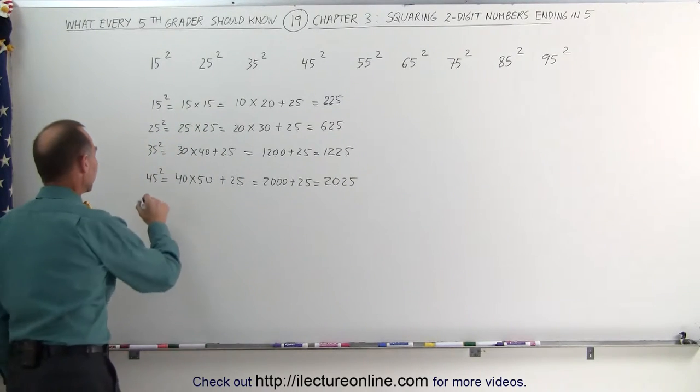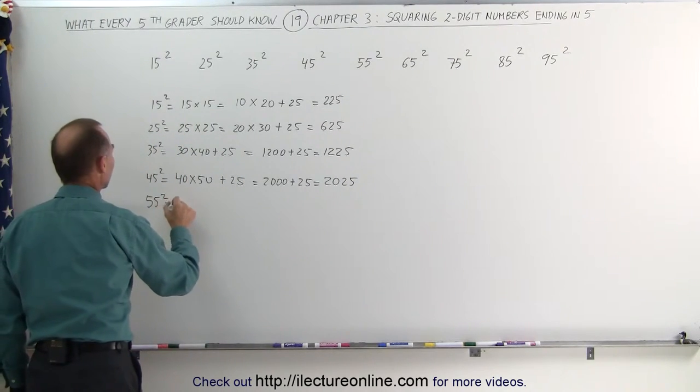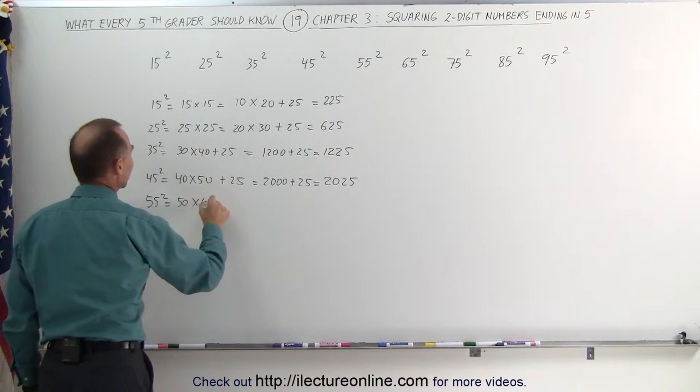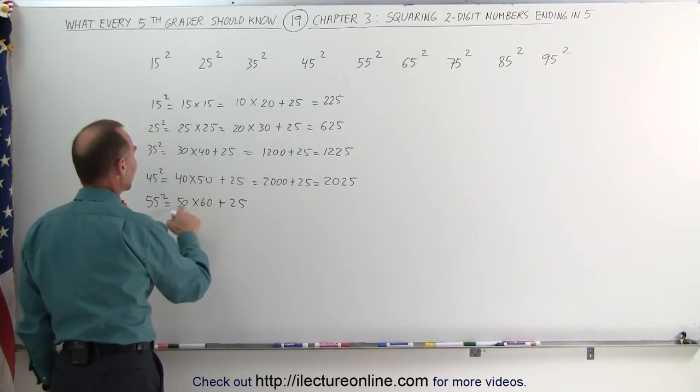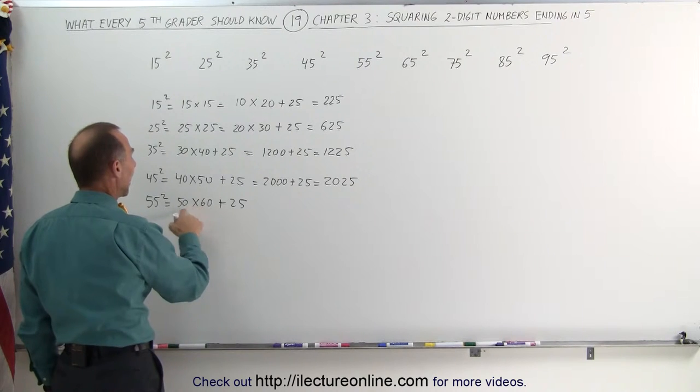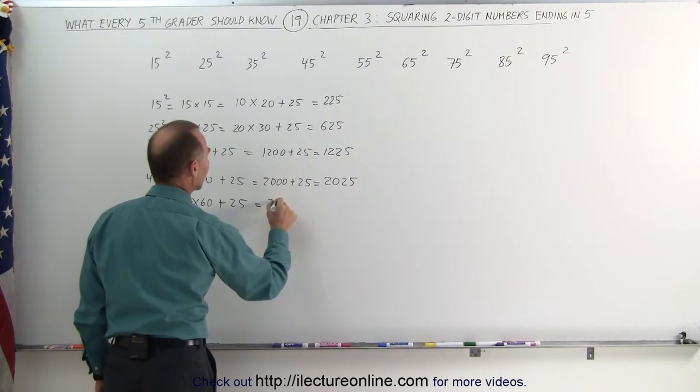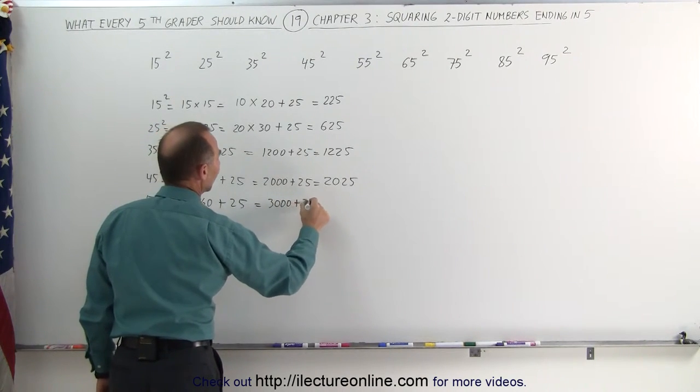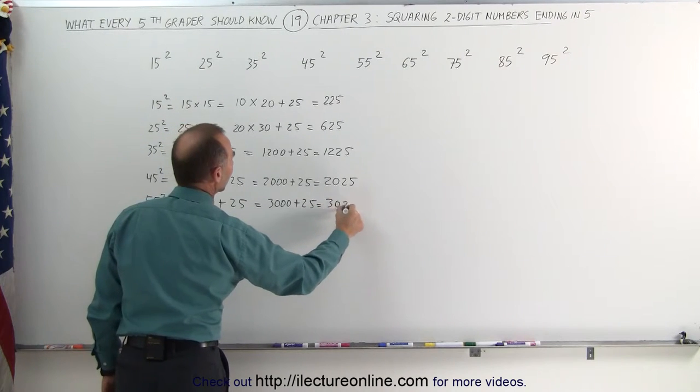Now let's try 55 squared. 55 squared, that's the same as 50 times 60, plus 25. 50 times 60, 5 times 6 is 30, add 2 zeros, gives you 3000, plus 25, that's equal to 3025.